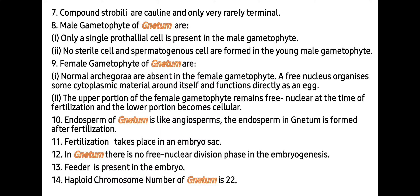Compound strobili are axillary and only very rarely terminal. Only a single prothallial cell is present in the male gametophyte. No striate cells and spermatogenous cells are formed in the young male gametophyte. Normal archegonia are absent in the female gametophyte. A free nucleus organizes some cytoplasmic material around itself and functions directly as an egg. The endosperm of Gnetum, like in angiosperms, is formed after fertilization.